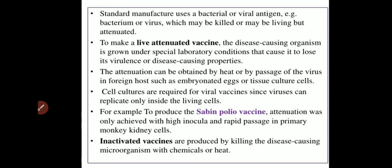In live attenuated vaccines, the virulence factor is removed from the bacteria or viruses, and these live attenuated organisms are directly injected into the individual after various treatments, triggering antibody generation. For example, to produce the Sabin polio vaccine — an example of a live attenuated vaccine — attenuation was achieved with high inoculum and rapid passage in primary monkey kidney cells.